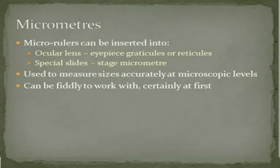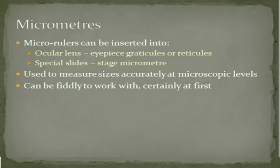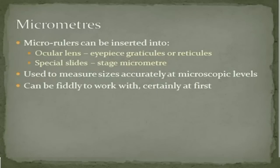Micrometers are both a unit of measurement that we use, as well as a shorthand way of talking about the rulers we use to make those measurements. A micrometer gets a different name depending on where you put it — if we put it into the ocular lens we call it an eyepiece graticule or reticule, and if it's on a special slide we call it a stage micrometer. These can be a little bit fiddly, so we're going to teach you an easy way to measure things relatively accurately, which is suitable for school level.